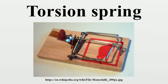Coulomb first developed the theory of torsion fibers and the torsion balance in his 1785 memoir. This led to its use in other scientific instruments, such as galvanometers, and the Nichols radiometer which measured the radiation pressure of light. In the early 1900s, gravitational torsion balances were used in petroleum prospecting. Today, torsion balances are still used in physics experiments.